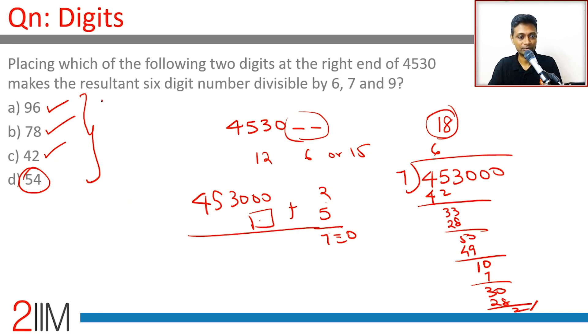96 by 7: 91 plus 5, multiple of 7 plus 5, this works. 78 gives a remainder 1 on division by 7, that doesn't work. 42 on division by 7 gives no remainder, that doesn't work. We're looking at 453096.